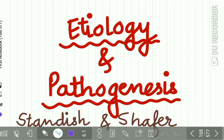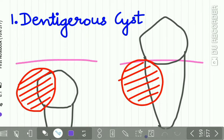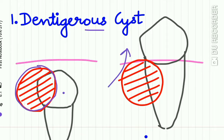Now talking about the etiology and pathogenesis, it was studied in detail by Standish and Schaeffer, who put forth 4 theories of pathogenesis of the lateral periodontal cyst. According to the first theory, the lateral periodontal cyst initially originates as a dentigerous cyst along the lateral surface of the crown when the tooth is unerupted. As the tooth erupts into the oral cavity, the cyst assumes a position in approximation to the lateral surface of the root.